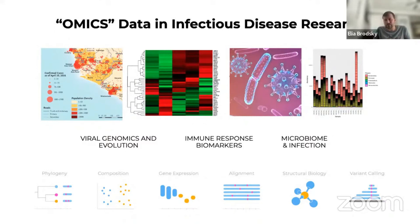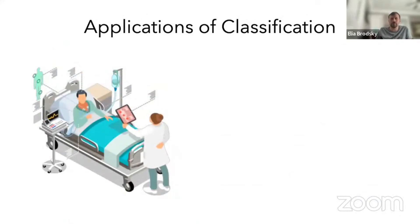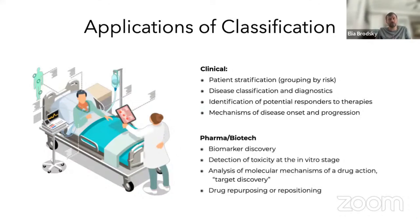What can you expect as a result of going through this training? The real outcome is a project. Not only will you listen to lectures from experts highlighting important aspects of bioinformatics development and applications, but you will also design a project that showcases what you can do with these skills. Specifically, we will talk about applications for clinical decision making — including patient stratification, disease classification, identification of potential responders to therapies, mechanisms of disease onset and progression, and how such tools are used in pharma and biotech for early biomarker discovery, detection of toxicity at the in vitro stage, analysis of molecular mechanism of drug action, and drug repurposing or repositioning.